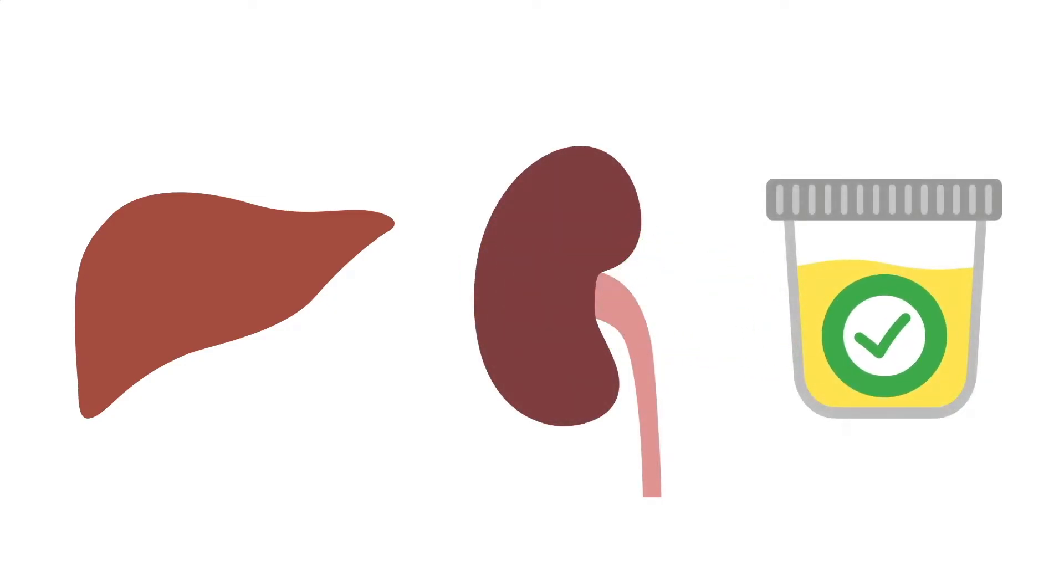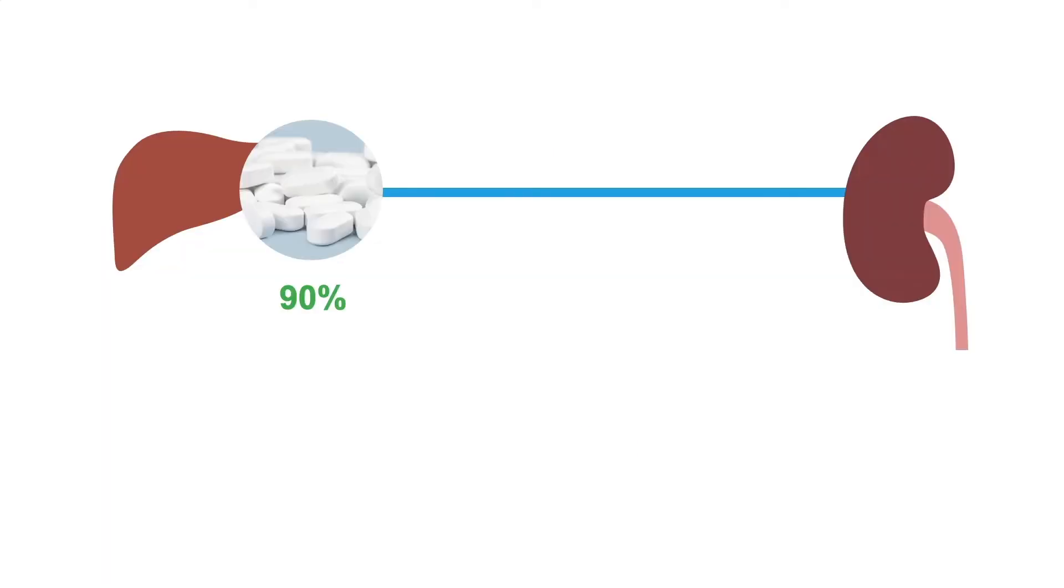This occurs through a direct and indirect route. The direct route is how approximately 90% is processed. The liver metabolizes acetaminophen in a single step by swapping one chemical part for another, and this non-toxic byproduct goes straight to the kidney.